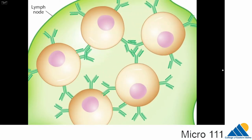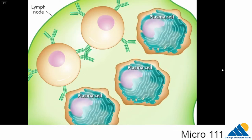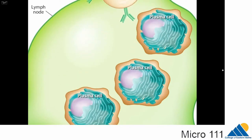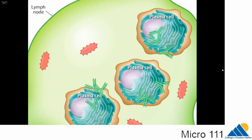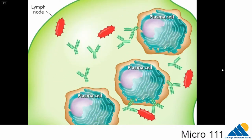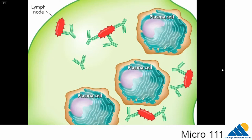Clonal expansion results in a large number of B-cells that can produce antibodies specific to the particular antigen. Some of these B-cells differentiate into antibody-secreting plasma cells. Others become memory B-cells that patiently wait to be called to future sites of infection, where they will generate a rapid antibody response. Antibodies bind to their antigenic matches and, by coating them, flag them for destruction by other cells of the immune system.